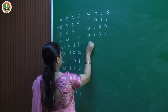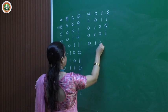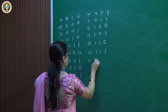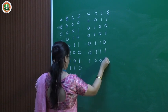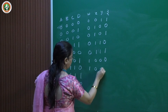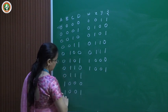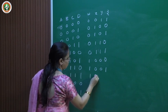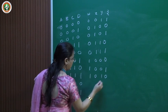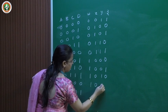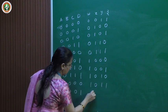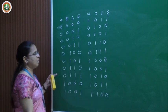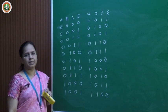Continuing the truth table: row 3 gives 6 (0110), row 4 gives 7 (0111), row 5 gives 8 (1000), row 6 gives 9 (1001), row 7 gives 10 (1010), row 8 gives 11 (1011), and row 9 gives 12 (1100). The truth table is now complete.